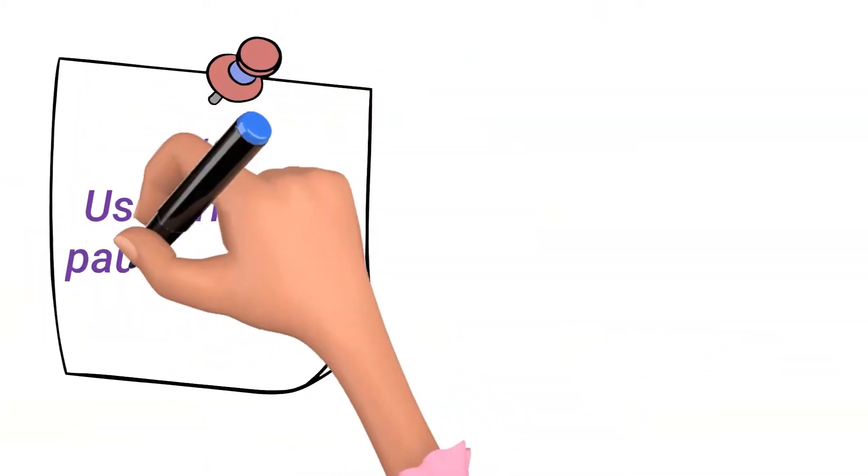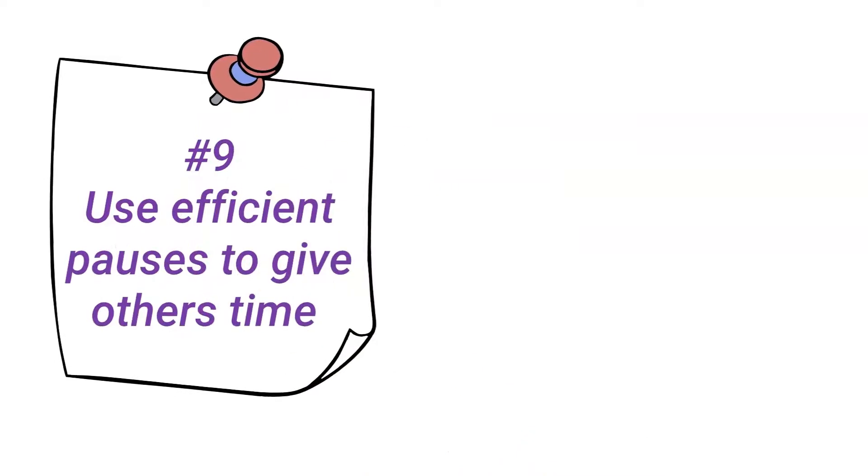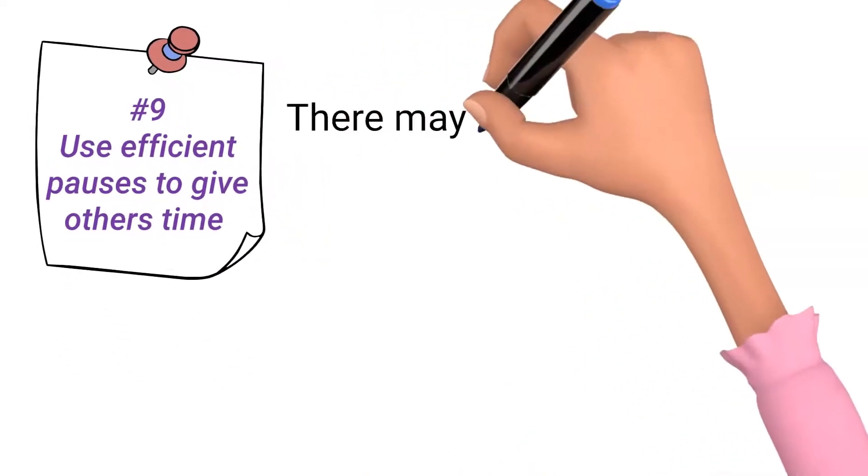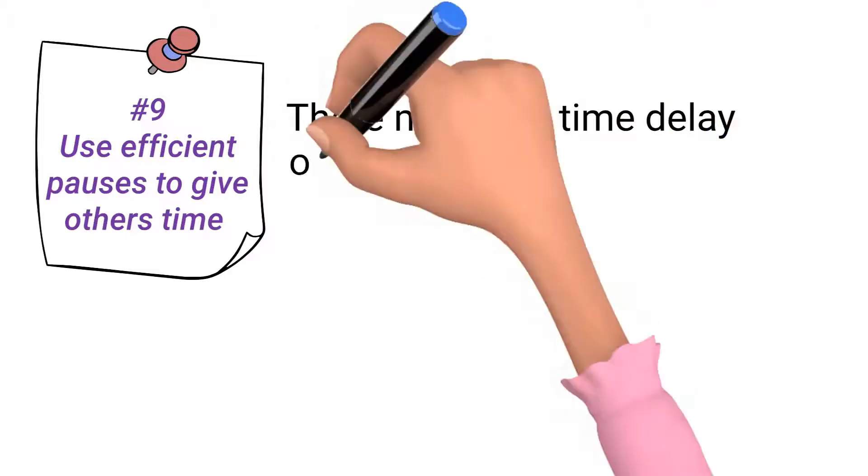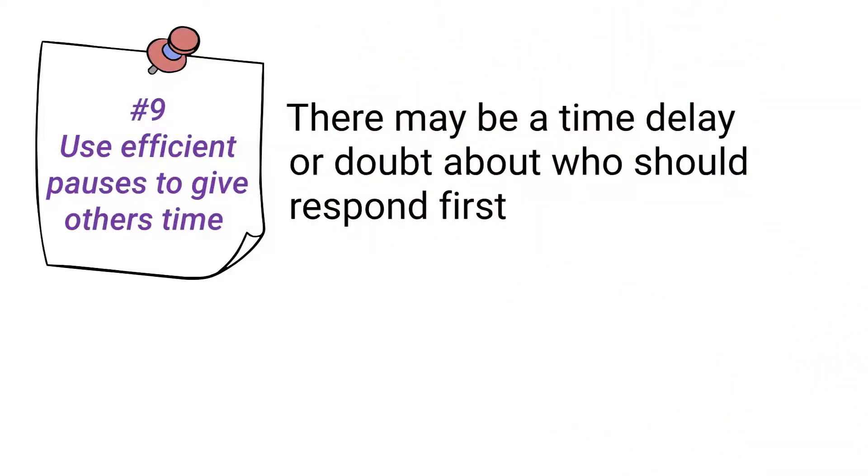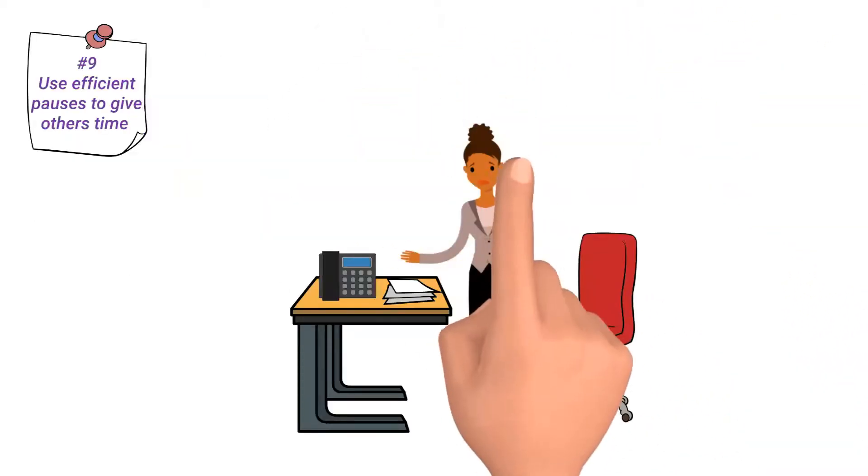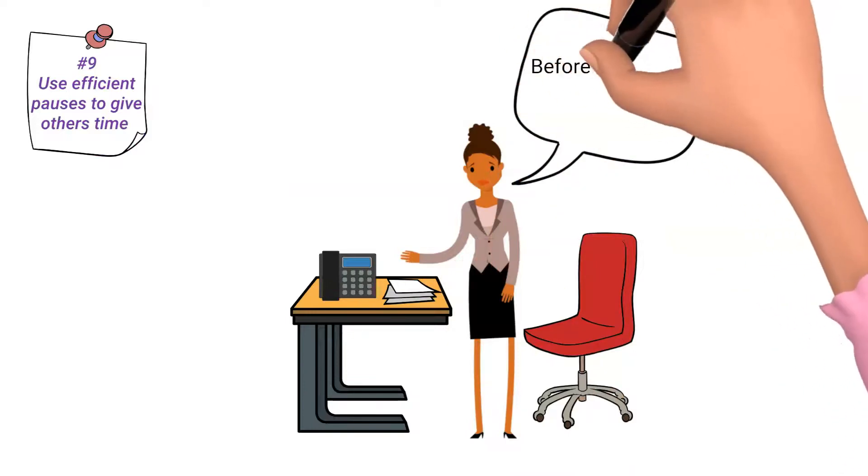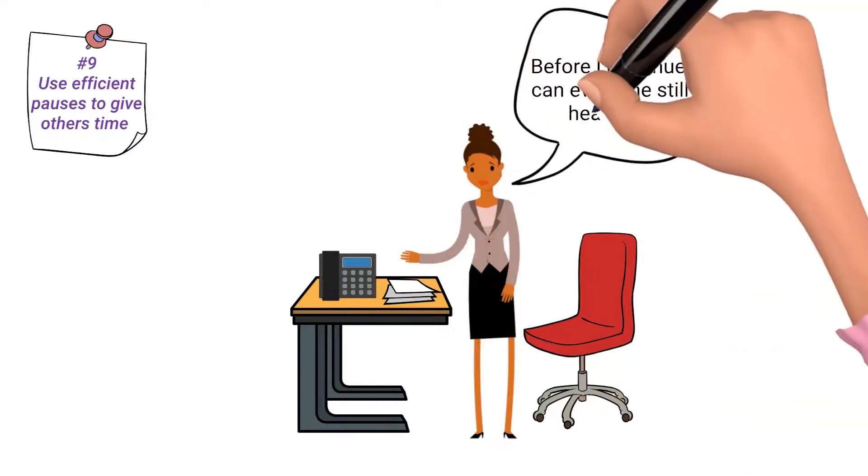Number 9. Use efficient pauses to give others time to contribute. There may be a time delay in participants receiving your communication, or doubt about who should respond first. Also, you should periodically check that everyone is connected, can hear you, and remember to unmute your phone before you speak.